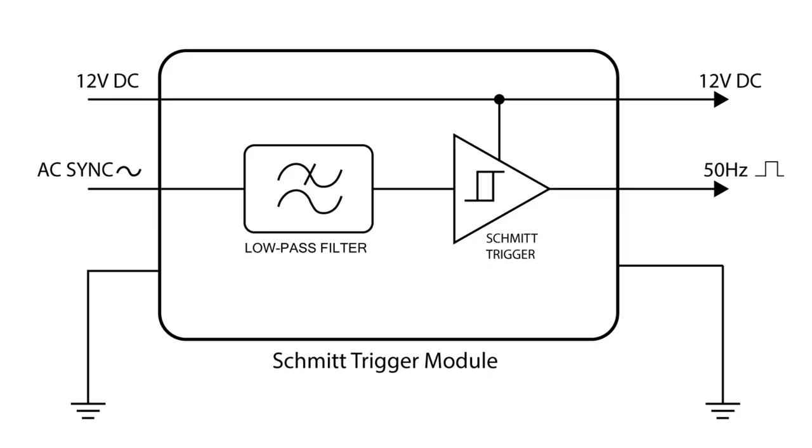The job of the Schmitt trigger module is to take the AC signal from the power transformer and extract a crisp, clean, noise-free square wave that can be used to drive the other counter sections of the clock. The first stage is a low-pass filter which removes any high-frequency noise. The second half is the actual Schmitt trigger which uses a switching action to make crisp, clean transitions in the output waveform.